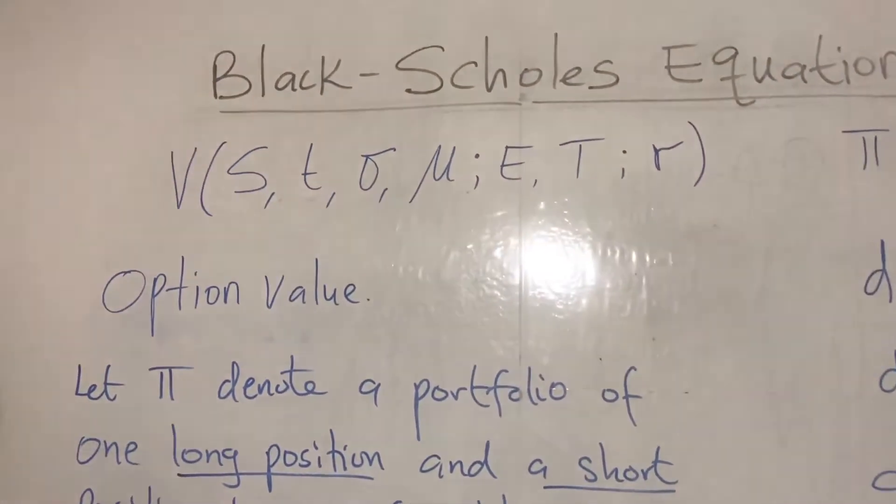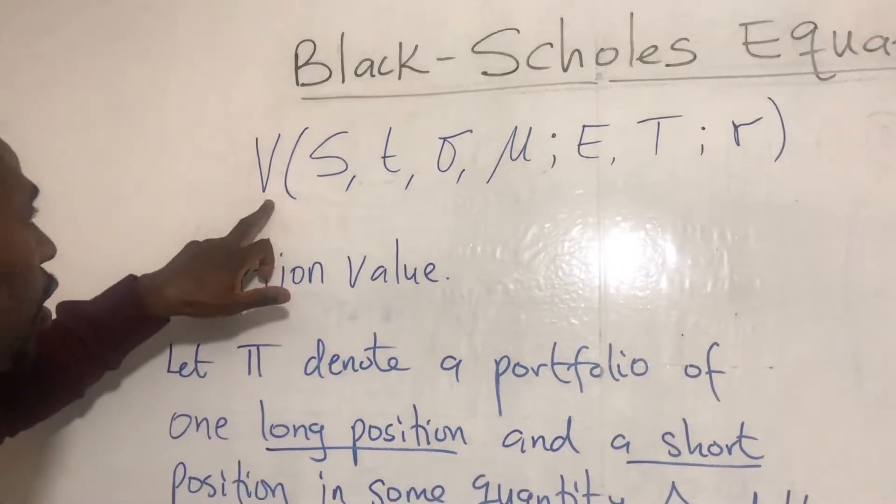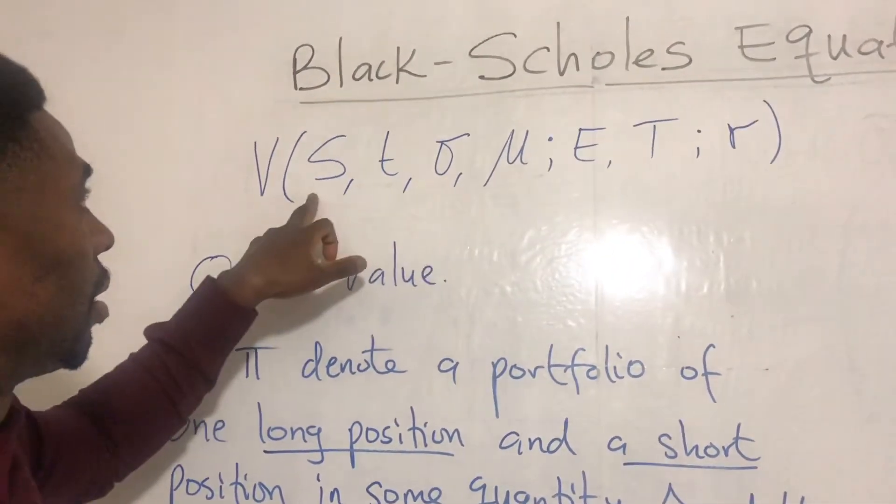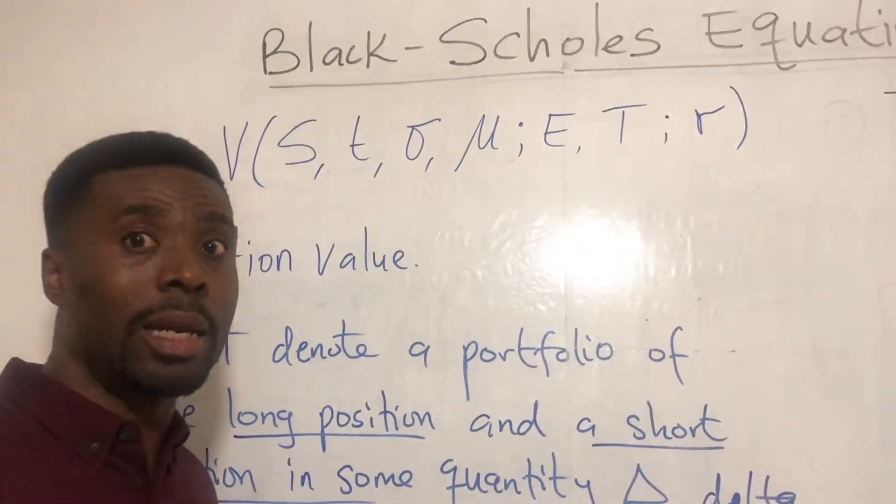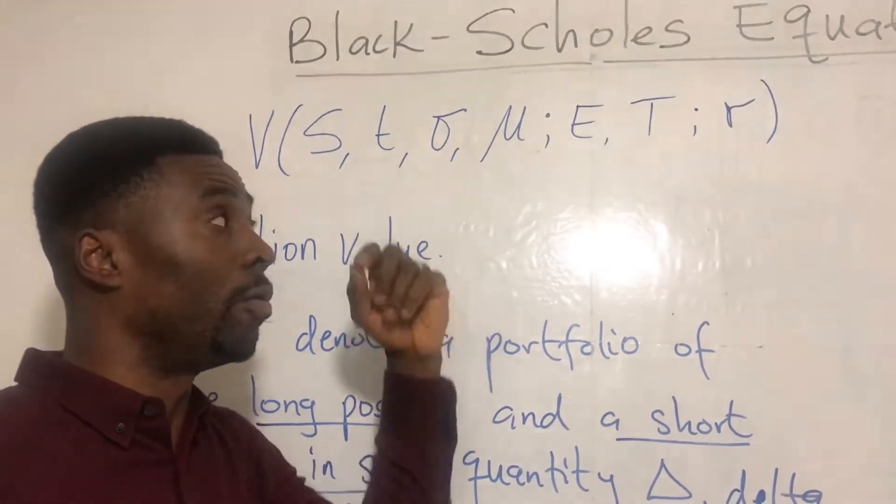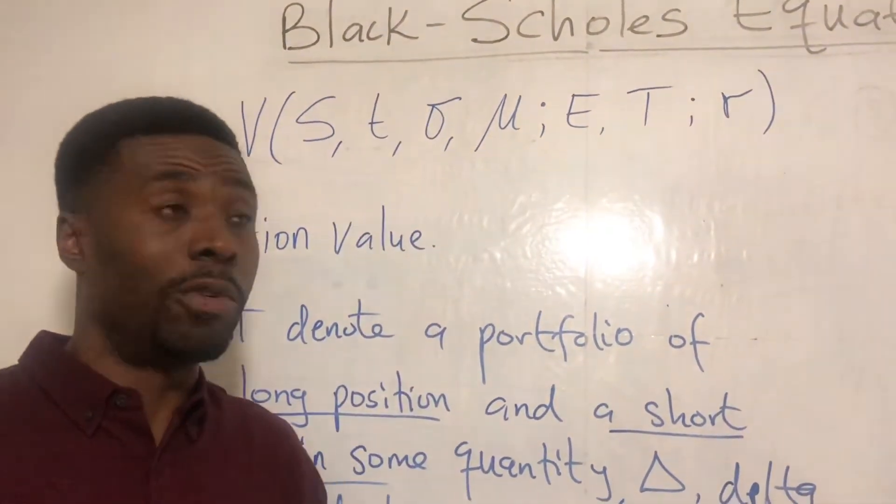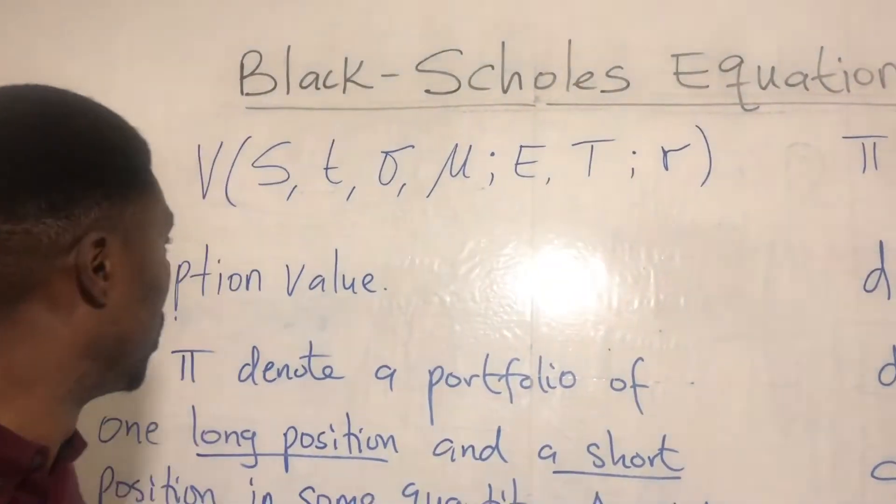We have an option value that we write as V, which is a function of these variables and parameters. The usual variables S for underlying stock and T for time. The parameters sigma and mu, where sigma is the volatility, and it goes all the way to r for the interest rate.